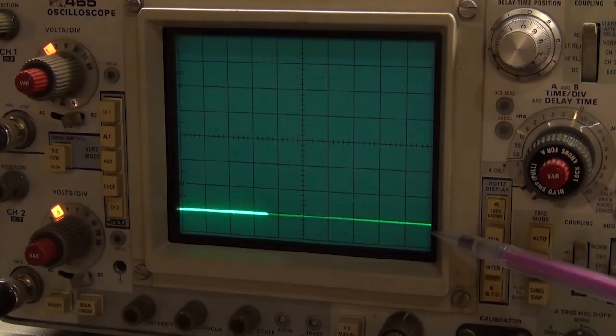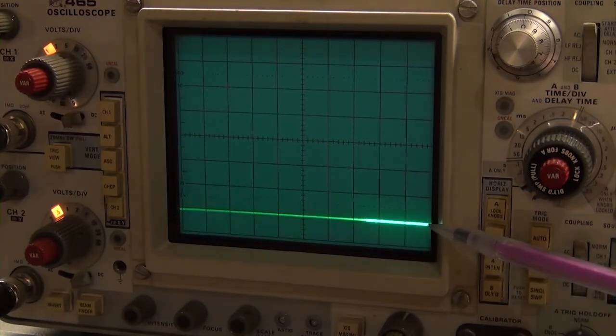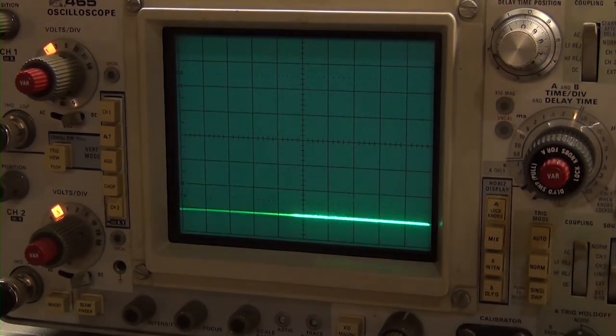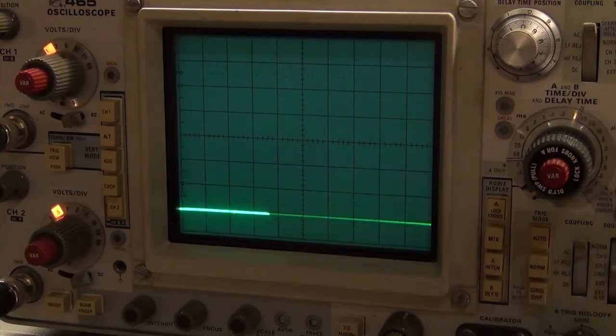But why does the trace come up at all? Well, even with zero input, the log amp does output approximately a quarter of a volt, which could scale to about a half a volt after going through the CA3140 op amp and log cal pot. So, experiment finished. I put R18 back in and here once again is the response to the 20 megahertz minus 30 dBm signal.